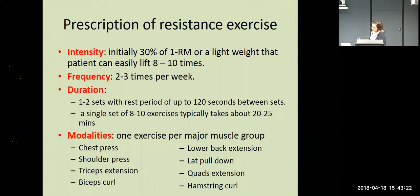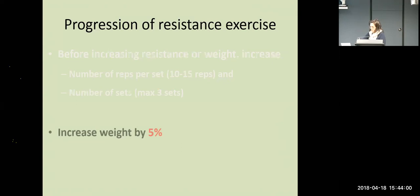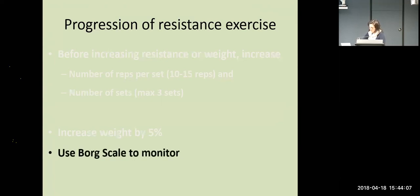How do you progress people doing resistance exercise? The same principles as aerobic exercise: the last thing you increase is the weights. First increase the number of reps up to about 15, then increase to the maximum number of sets — three — and when a patient is exercising at those maximum levels, you start increasing the weight, typically by 5% each time. Using the Borg scale will help you work out whether they're at the right level. Aerobic exercise for a cardiac patient is around 11 to 13 on the Borg scale. Strength training — they can push a little bit harder — around 13 to 15.